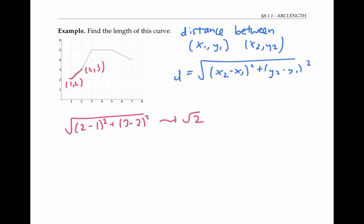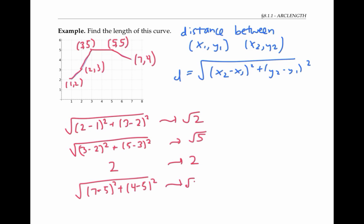The length of the next line segment can be calculated similarly. And the next piece has length 2, we don't even need the distance formula for that one. And the last line segment has a length of the square root of 5. If we add up all the lengths of these four line segments, we get a total length of the curve of 2 times the square root of 5 plus the square root of 2 plus 2.